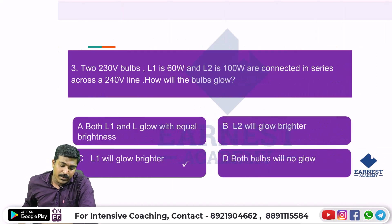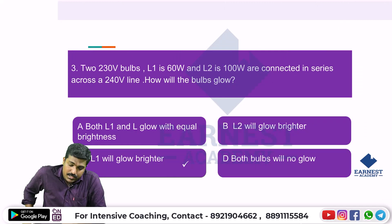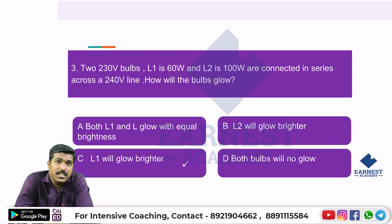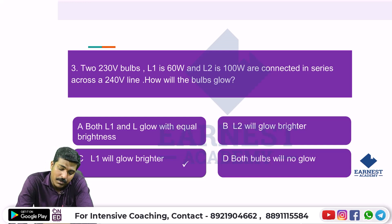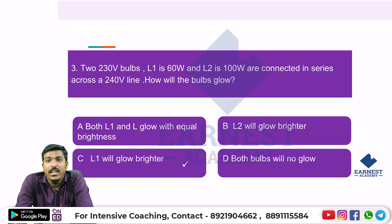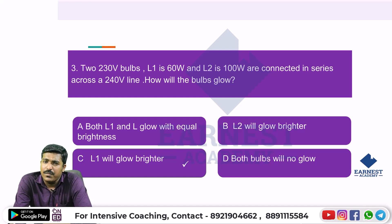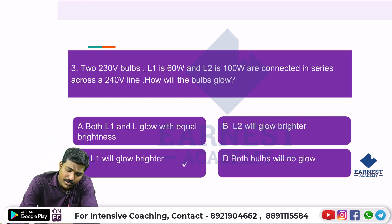Next question: Two 230-volt bulbs, L1 rated at 60 watts and L2 rated at 100 watts, are connected in series. How do the two bulbs glow?